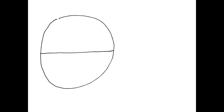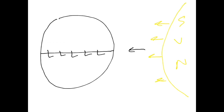Let's draw planet Earth with the equator and the sun. If the equatorial zone is receiving a lot of direct solar radiation, then this area is going to be pretty warm — we have a lot of surface heating. And because we have a lot of surface heating, we're going to create a low pressure zone around the equatorial region. We'll call this the equatorial low.